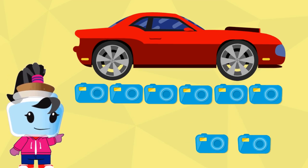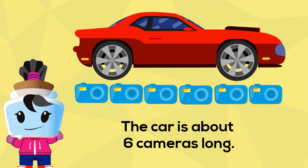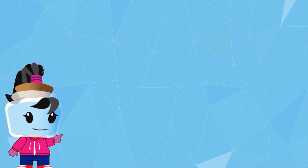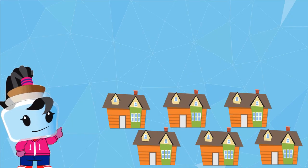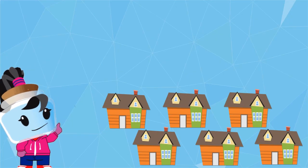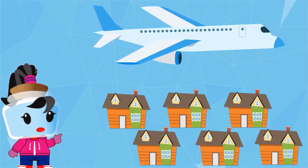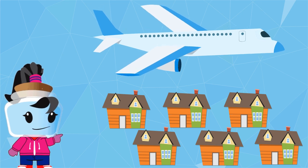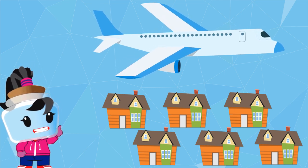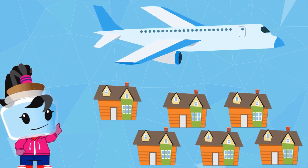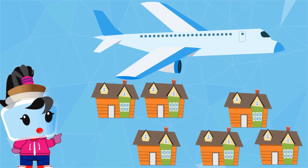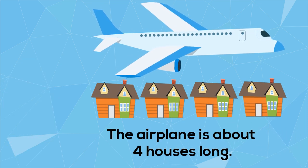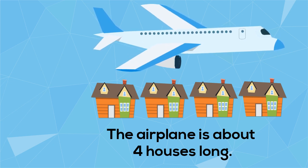The car is about six cameras long. Next, use the houses to measure the length of the airplane. Line up the houses below the airplane and count: one, two, three, four. Therefore, the airplane is four houses long.